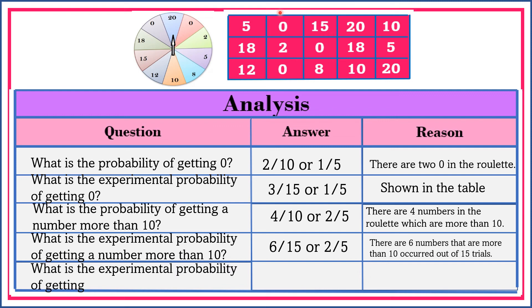The last question: what is the experimental probability of getting numbers 10 and below? Since the question is experimental probability, let's refer our answer to the table. Let's count how many numbers are 10 and below. We have 1, 2, 3, 4, 5, 6, 7, 8, 9. Therefore, the experimental probability of getting numbers 10 and below is 9 over 15 or 3 fifths.